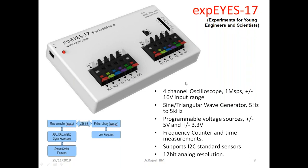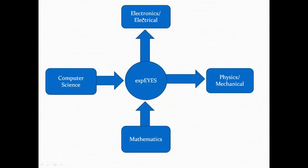The XPS hardware was developed by Inter-University Accelerator Centre, New Delhi, by Dr. Ajit Kumar. Its features include a 4-channel oscilloscope, function generator, programmable voltage sources PV1 and PV2 providing DC power, and support for I2C standard sensors. It provides 12-bit analog resolution and is controlled by software written in Python or C programming. With this hardware we can do experiments in electronics, electrical, physics, and mechanical domains.